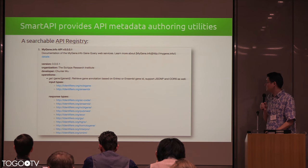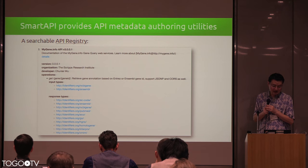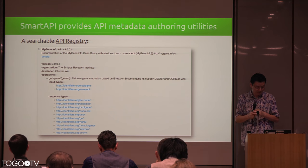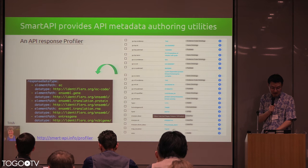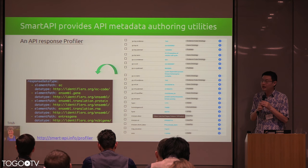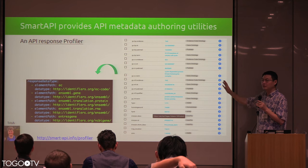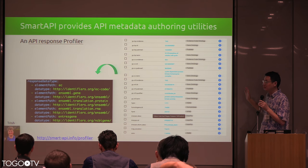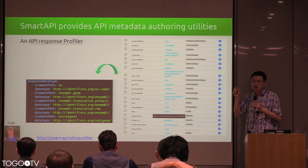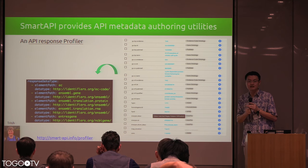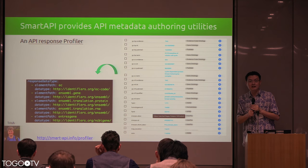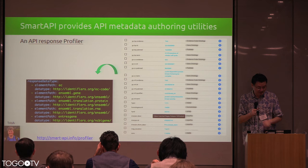We provide a searchable API registry where people can search and find APIs — and notably you can search against input type and output type. There's also another tool developed by Trish: an API response profiler. If you have a JSON-LD API, you can use this tool to help map your fields to identifiers.org URIs. It does its best to suggest matches based on value regex or field names, and you can manually select from a drop-down to pick the accurate one.